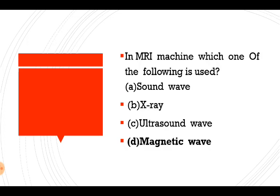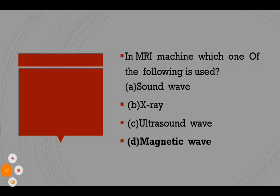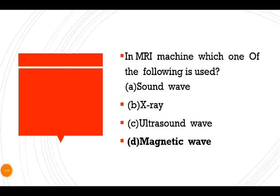An MRI scanning machine uses which of the following: sound wave, X-ray, ultrasound wave, or magnetic wave? Magnetic waves are used in an MRI scanning machine. MRI stands for Magnetic Resonance Imaging.